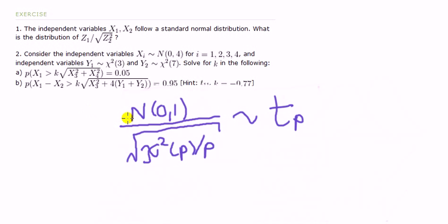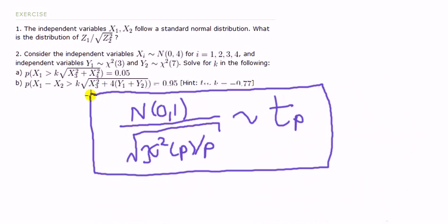To say that again, take the standard normal, divide it by the square root of a chi-square divided by its respective degree of freedom, will be t, where the degree of freedom for the t will match that for the chi-square. Okay, let's put that in the box because that is all we really want to say. That's the result.